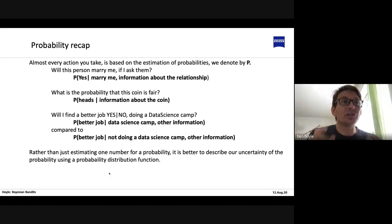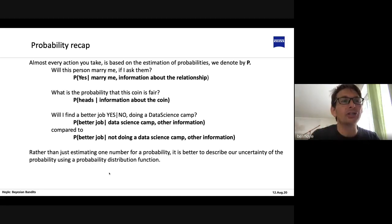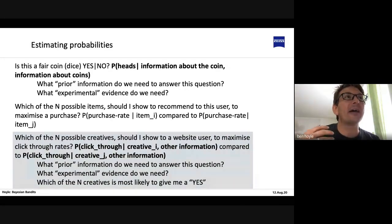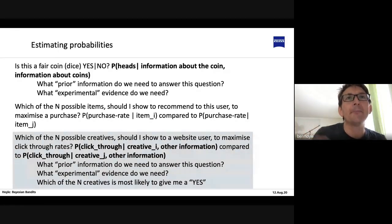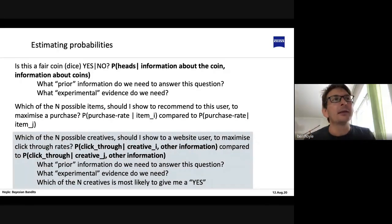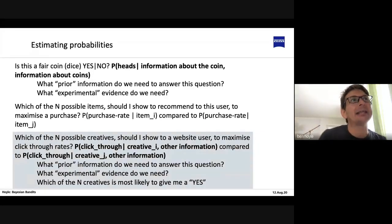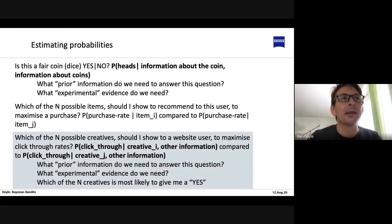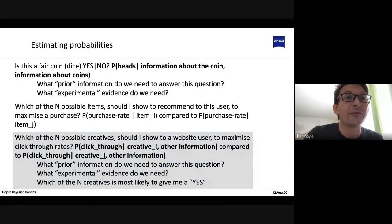Rather than just estimating one number for a probability, it's actually better to describe our uncertainty in the form of a probability distribution function. For example, let's say we want to know if a coin is fair — what's the probability we'll get heads based on information we have about the coin? We should set the problem up by asking: what prior information do we need? Do we need results of many flips? Or do we get prior information from our general knowledge of coins?